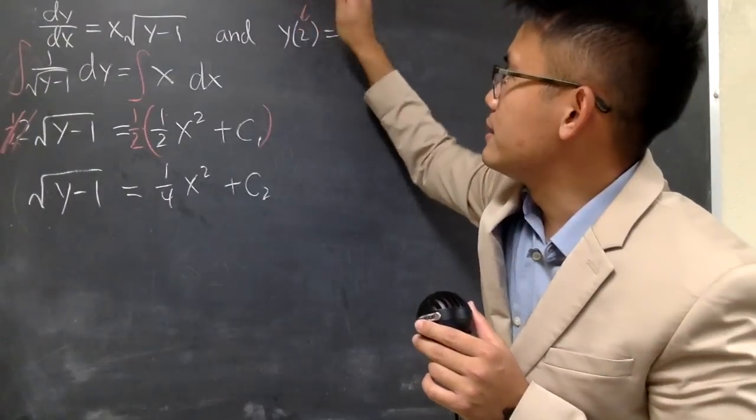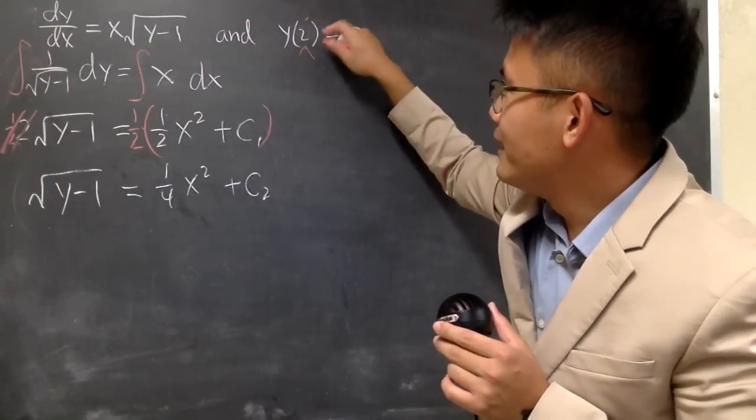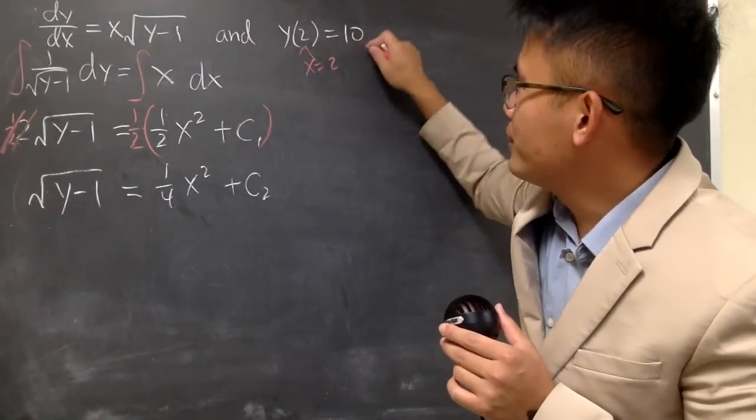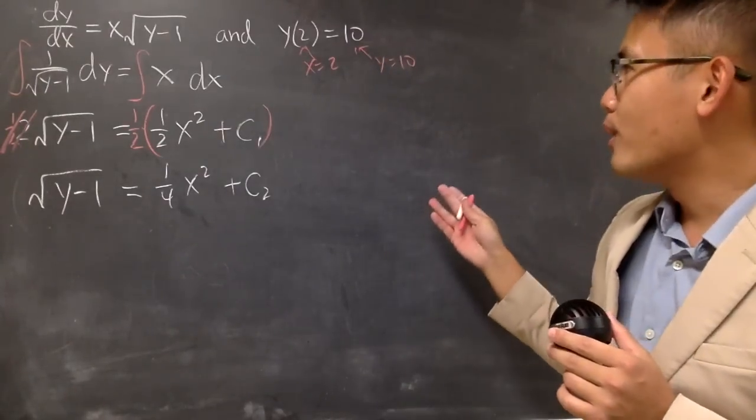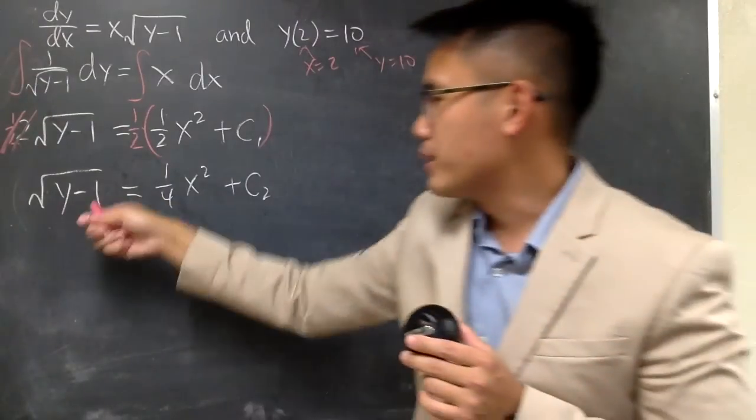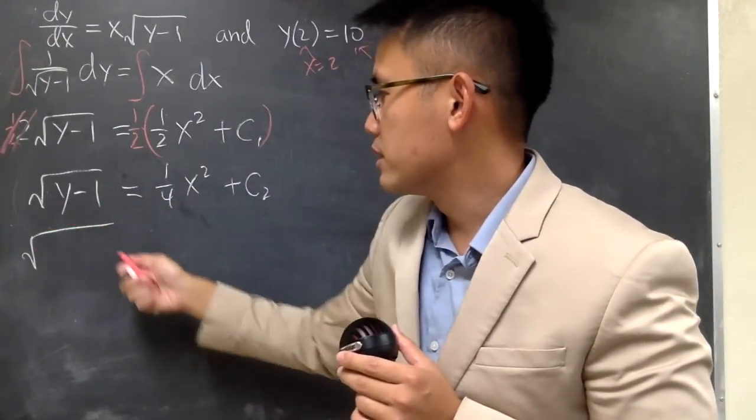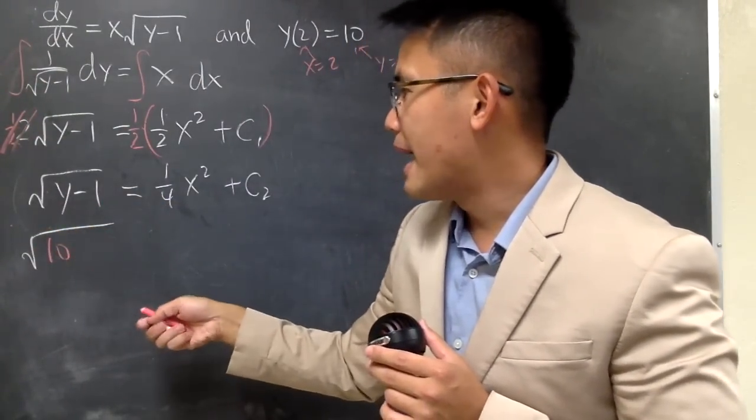And I know you guys cannot see so I will actually write this down. This means x is equal to 2 and y is equal to 10. And I will just plug in 10 into here. I get square root of 10 minus 1.